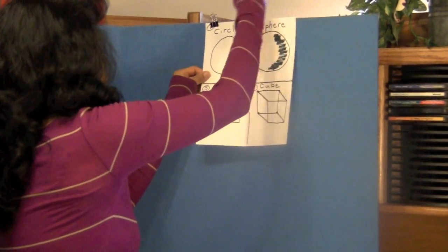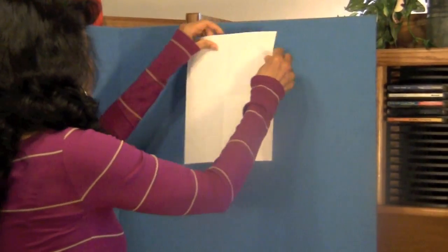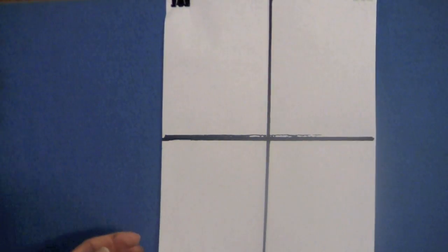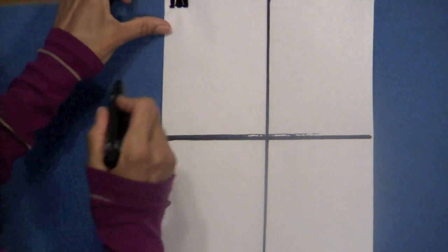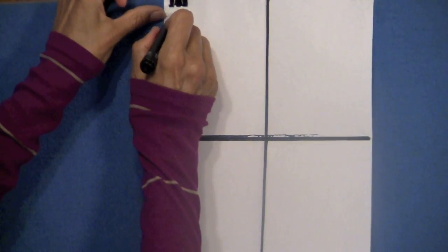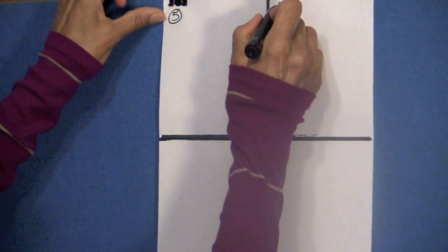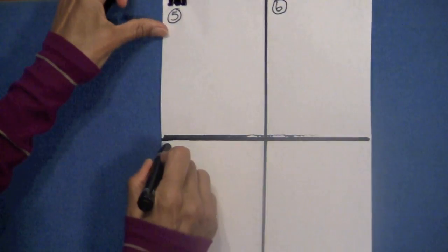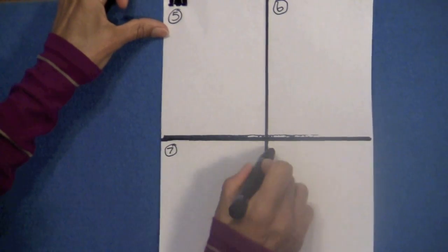Now I want you to turn your paper to the back side. Alright boys and girls, you turned your paper over and you drew your lines on your fold again. Then we're going to number these boxes. Remember on the other side it was four. This is going to be box five, six, seven, and eight.